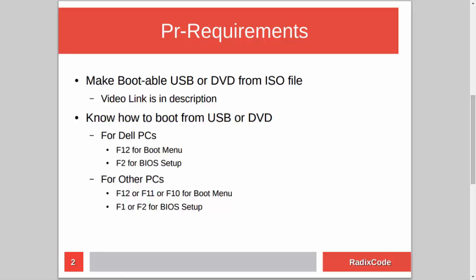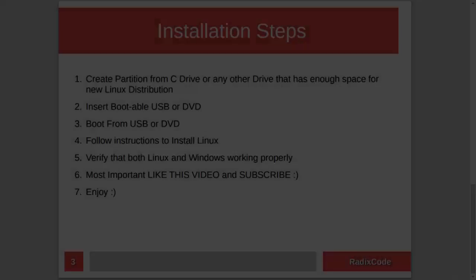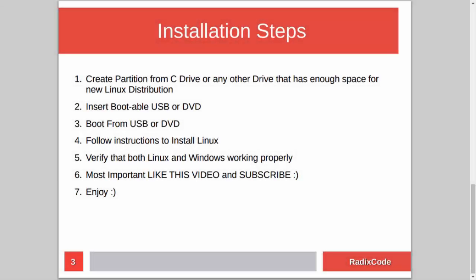The installation steps are very simple. First, we need to create an empty partition for our Linux distribution from the C drive or any other drive that has enough space. After this, we will insert our DVD or USB drive into the computer and restart. Then we will boot from the USB or DVD drive and install our Linux distribution.